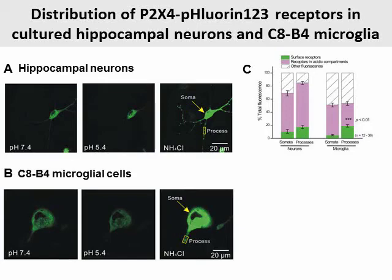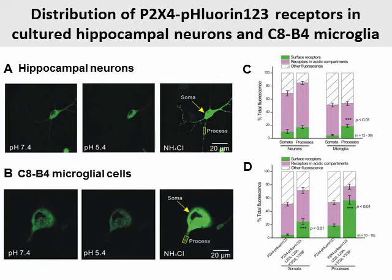Next, we set out to evaluate the utility of P2X4 fluorine-123 in cultured hippocampal neurons and the CAB4 microglial cell line. We analyzed fluorescent signal from somatic regions as well as from processes. There were no differences in the relative proportions of cell surface and intracellular P2X4 fluorine-123 receptors in the somata or processes of neurons. However, for CAB4 microglial cells, the surface fraction was significantly larger in the processes compared to somata. Moreover, quadruple P2X4 mutants which lack endocytic endo-lysosomal targeting significantly increased the fraction of receptors on the cell surface for CAB4 microglial processes and somata, supporting that distribution is determined by specific amino acid residues in the cytosolic N and C termini.